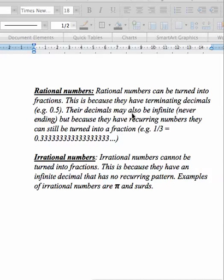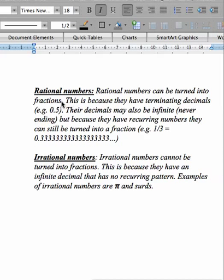So if we come back to this definition, please make sure you write it down at some point. So rational numbers can be turned into fractions. And we know they can be turned into fractions because of two things. One, they have terminating decimals or decimals that end, for example, 0.5. Or the decimals may also be infinite, so never ending. But because they have recurring numbers or a pattern, they can still be turned into a fraction. And that's just it. So a rational number can be turned into a fraction because of two things. It's either got an ending decimal, like 0.5. Or it has a never ending decimal. But the decimal has a pattern.